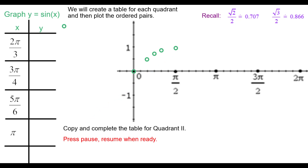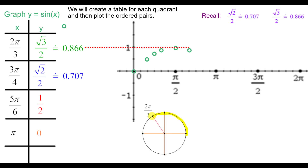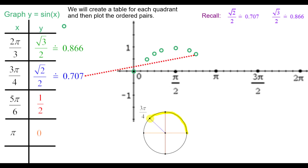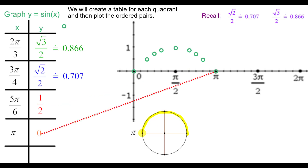For quadrant 2, the sine is positive. The sine of 2π/3 is about 0.866. The sine of 3π/4 is about 0.707. The sine of 5π/6 is exactly 1/2. And the sine of π is back to 0.